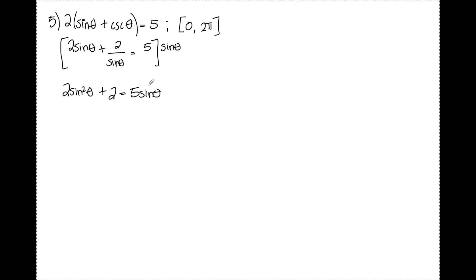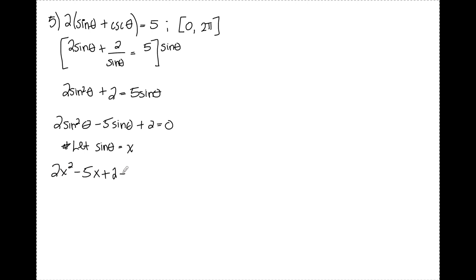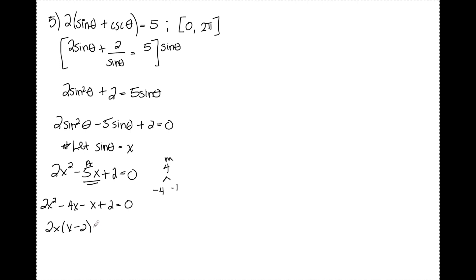Since I have a sine squared and a sine, I'll subtract the 5 sine theta over and factor. Letting sine theta equal x, I rewrite this as 2x squared minus 5x plus 2. I need two numbers that add to negative 5 and multiply to positive 4: that's negative 4 and negative 1. Splitting the middle term into negative 4x and negative x and doing factor by grouping: pulling out 2x from the first two terms leaves x minus 2; pulling out negative 1 from the last two leaves x minus 2. Factoring out x minus 2 gives (x minus 2)(2x minus 1).